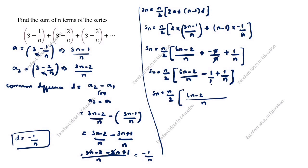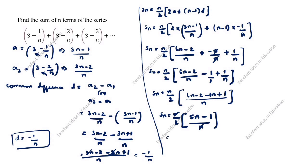Taking n as the common denominator: Sn = n/2 × (6n - 2 - n + 1)/n. Simplifying: 6n - n = 5n, and -2 + 1 = -1. So Sn = n/2 × (5n - 1)/n. The n cancels, giving Sn = (5n - 1)/2. This is the answer.